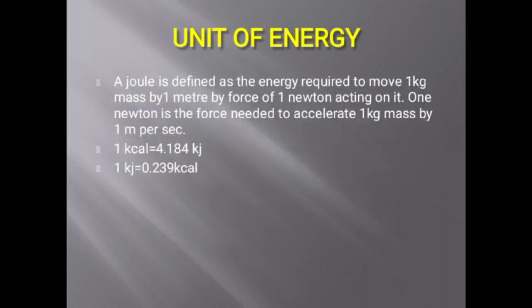A joule is defined as the amount of energy required to move 1 kg mass by 1 meter by a force of 1 newton acting on it. 1 newton is the force needed to accelerate 1 kg mass by 1 meter per second. 1 kilocalorie equals 4.184 kilojoules. 1 kilojoule equals 0.239 kilocalories.